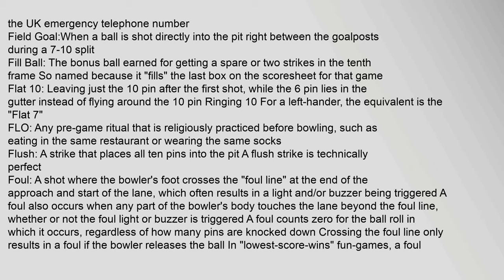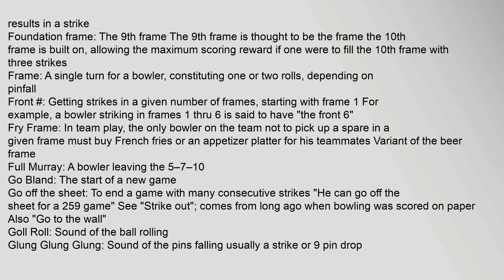Flush: a strike that places all 10 pins into the pit; a flush strike is technically perfect. Foul: a shot where the bowler's foot crosses the foul line at the end of the approach, often triggering a light or buzzer. A foul also occurs when any part of the bowler's body touches the lane beyond the foul line; it counts zero for that ball roll regardless of how many pins are knocked down. Foundation frame: the ninth frame, thought to be the frame the tenth frame is built on, allowing the maximum scoring reward if one fills the tenth frame with three strikes.